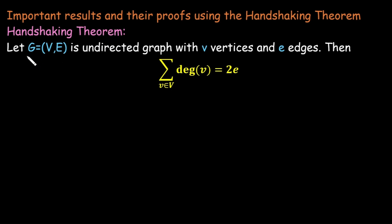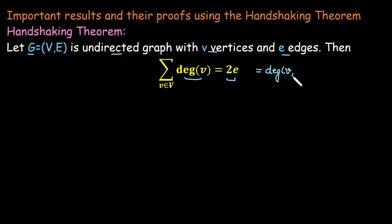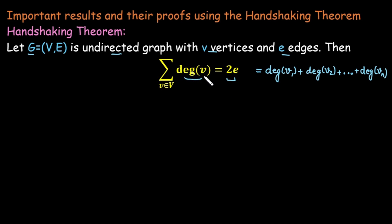Mathematically, if G is an undirected graph with V vertices and E edges, then the total degree of the graph — that is, the sum of degree of each vertex — is equal to twice of E. This makes sense because every edge contributes exactly two times to the total degree.